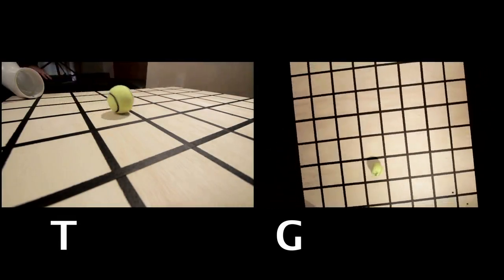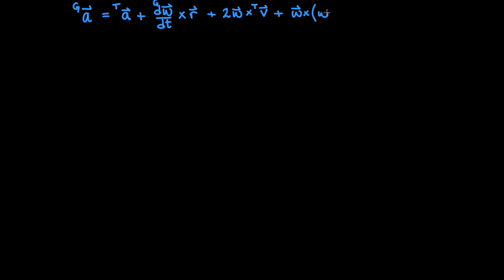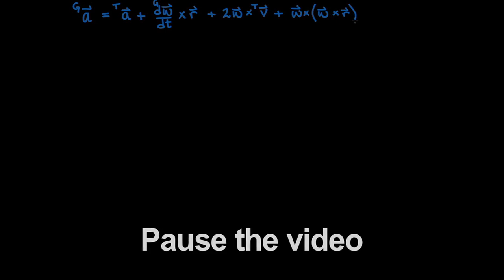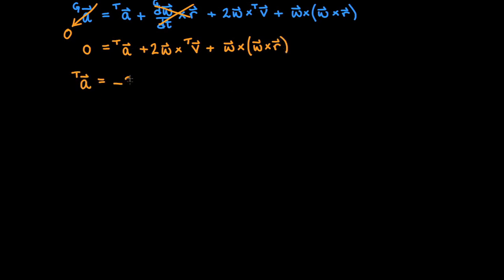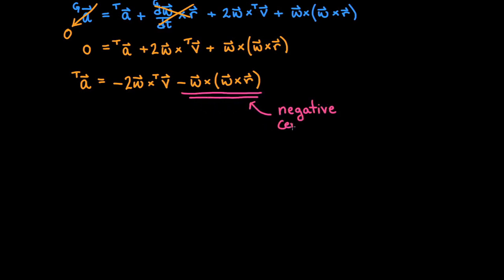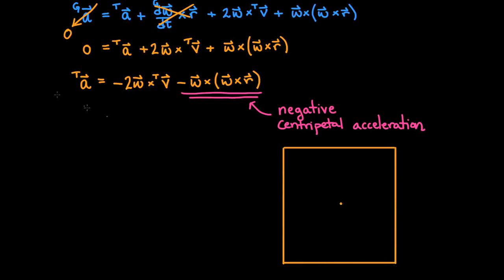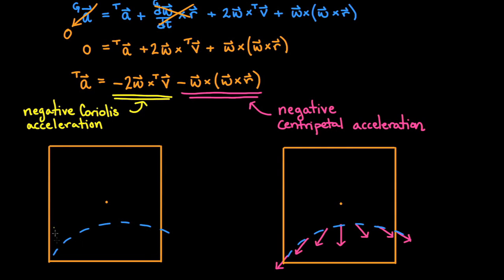Let's use what we know about the G frame to understand what these accelerations are in the T frame, using the general formula for acceleration in a rotating frame that we found earlier. Pause here and determine the acceleration in the T frame. Because the velocity is essentially constant in the G frame, the G frame acceleration is zero. We can arrange the remaining nonzero terms to find an expression for the acceleration of the ball that we observe in the T frame. We find it is equal and opposite the sum of the Coriolis acceleration and the centripetal acceleration. This acceleration is always pointing outwards from the center of rotation. The second term, the negative Coriolis acceleration, is perpendicular to the velocity of the ball in the T frame, creating the curvature of the ball's path.